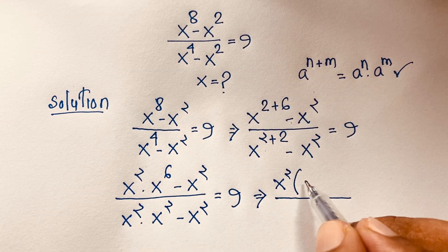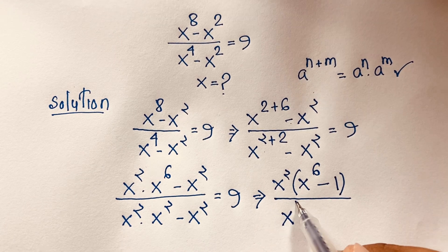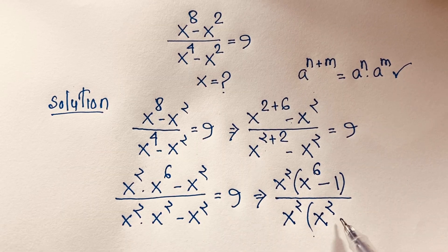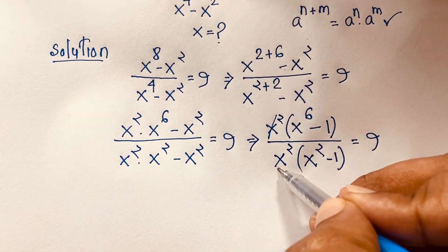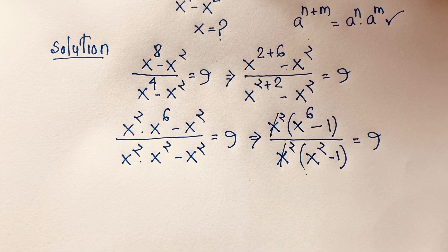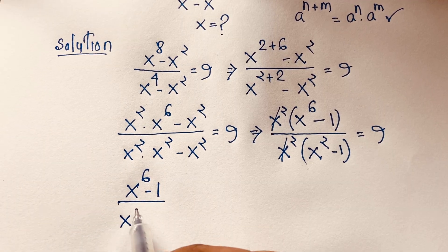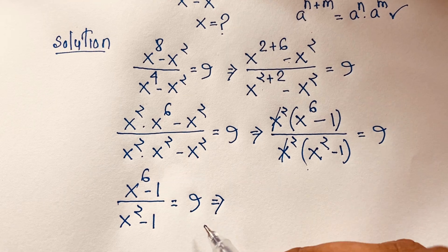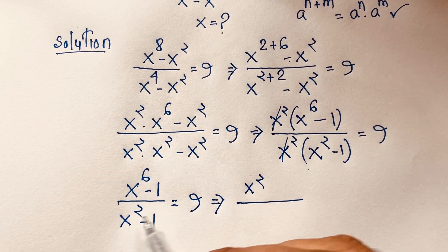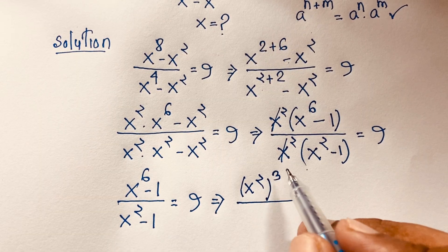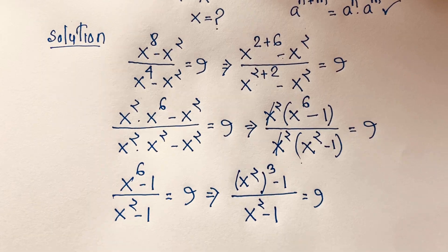Taking x to the power 2 as common in the numerator gives x to the power 6 minus 1. In the denominator, x to the power 2 is also common, giving x to the power 2 minus 1, all equal to 9. The x to the power 2 factors cancel, leaving x to the power 6 minus 1 over x to the power 2 minus 1, equal to 9. Now I want to apply the cubic formula. Since x to the power 6 equals (x to the power 2) to the power 3, using the exponential rule 2 times 3 equals 6.